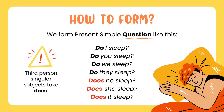Do you sleep? Do I sleep? Do we sleep? Do they sleep? Does he sleep? Does she sleep? Third Person Singular subject takes "does".